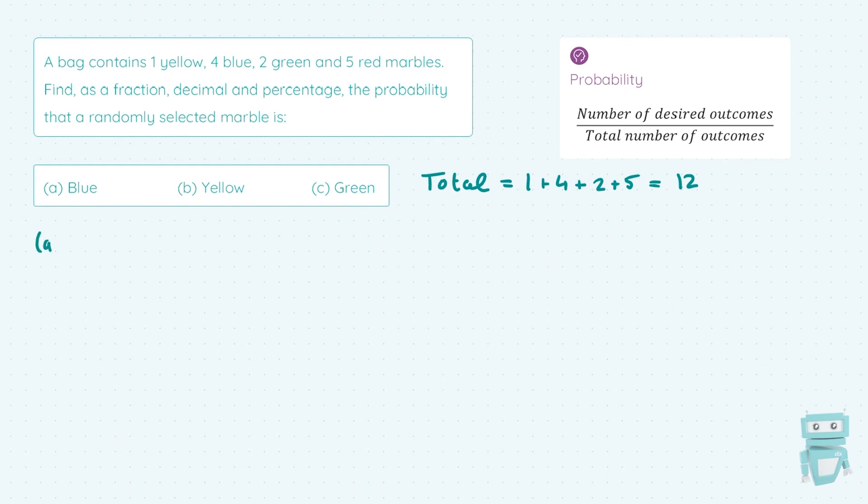So part A asks me to find the probability of selecting a blue marble. Now, watch how I write this. I say P of blue, which means the probability of blue. So that's probability notation there, P of whatever your outcome is. And all I do is it's the number of desired outcomes. So there's 4 blue out of the total number of outcomes, which is 12. So as a fraction, I'll simplify this to 1 over 3.